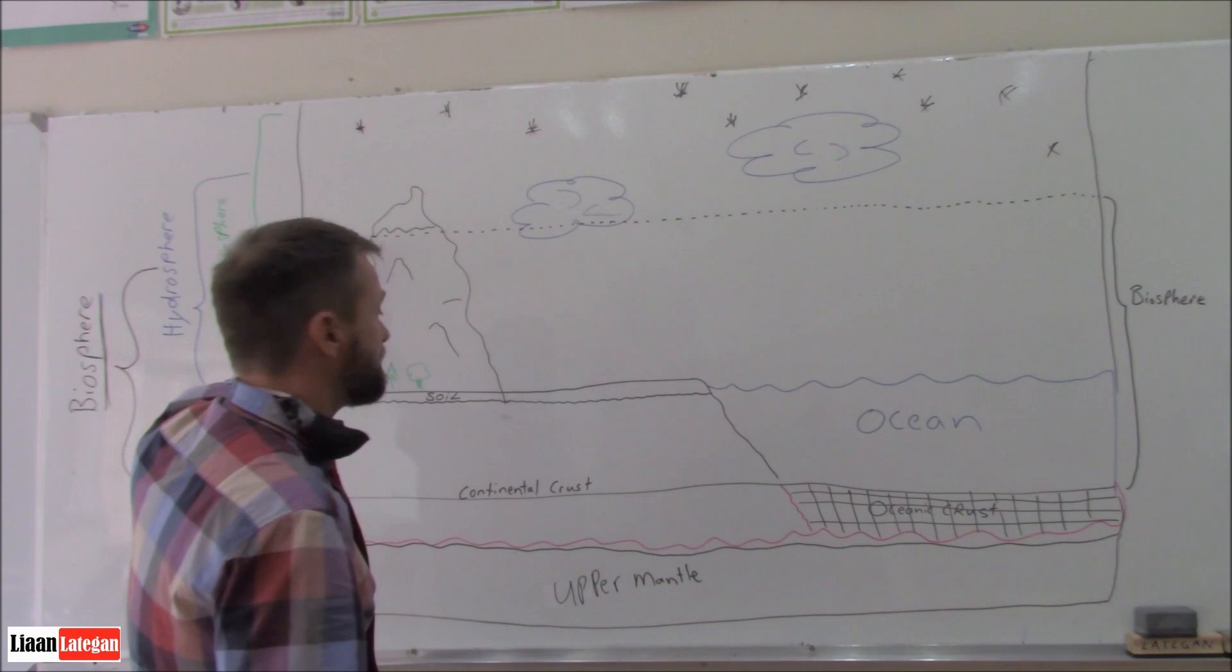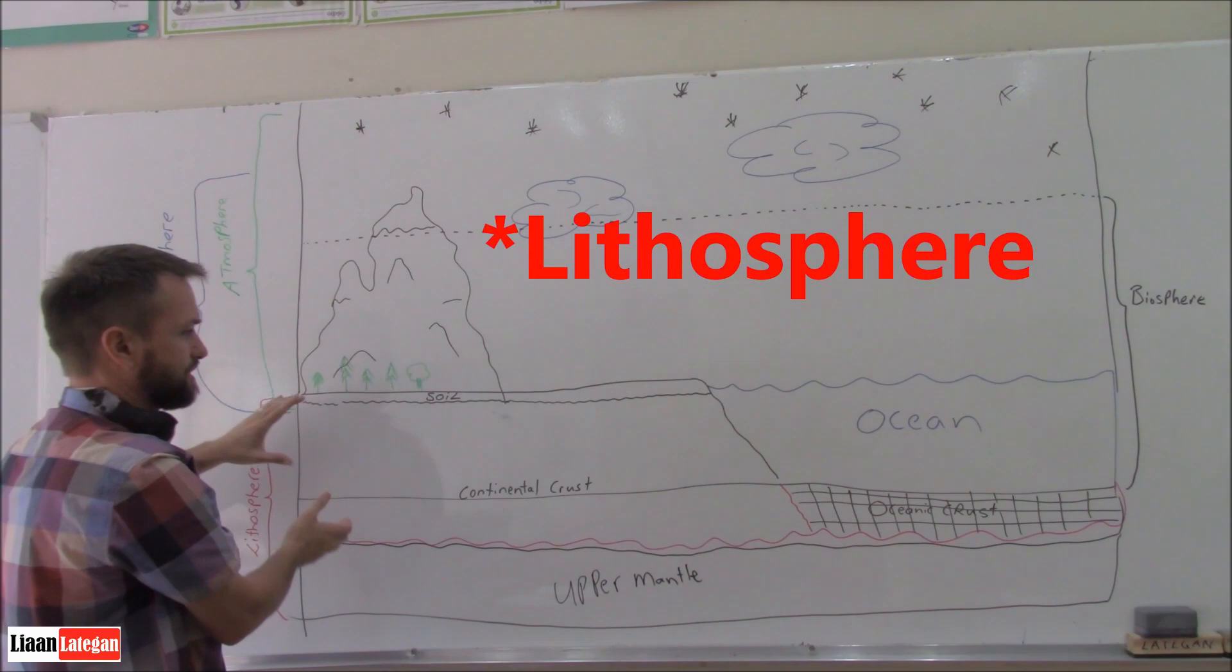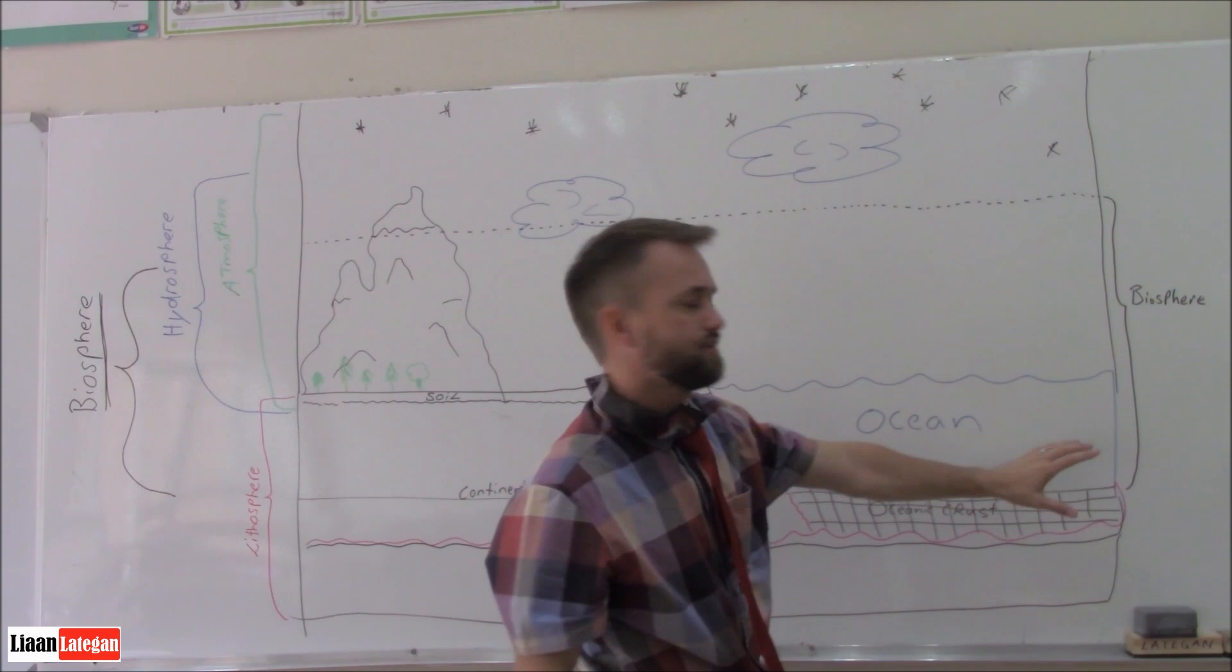The mountains, everything else falls underneath the hydrosphere. Then, below the surface, the soil surface, you get the lithosphere. That's where you get your soil, your continental crust. And even the ocean, the depth of the ocean falls underneath that. And even the oceanic crust. So that is all called the lithosphere.